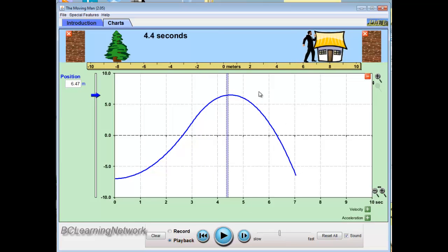Okay, so it basically comes to a momentary stop. I'm not quite there, but you get the idea. Now what happens? So at this position, roughly around 6.5 meter mark, his velocity is zero.